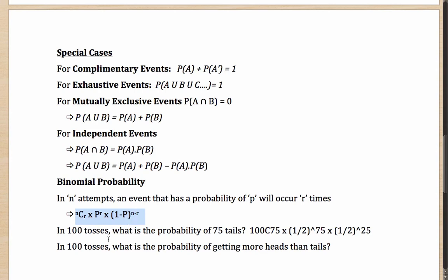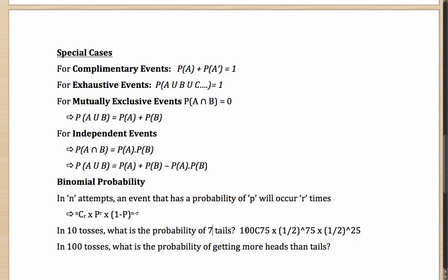So if instead of 100 tosses it was 10 tosses, and the question asked for the probability of seven tails, you would first select the seven tosses for tails from 10 — that is 10C7 — then half to the power seven for getting those seven tails, and then half to the power three for getting the remaining heads.